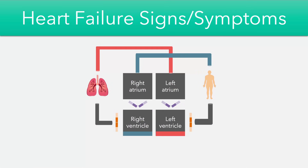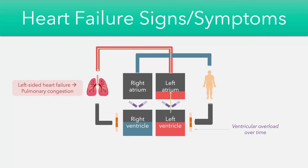In terms of signs and symptoms of heart failure, there's often an overlap between reduced and preserved ejection fraction cases, depending on which side of the heart is affected first. In left-sided heart failure, ventricular overload on the left ventricle feeds back into the left atrium and eventually into the pulmonary system, leading to respiratory symptoms as fluid backs up into the lungs causing congestion. If the right side is affected first, overload feeds back to the rest of the body, leading to peripheral congestion and edema.